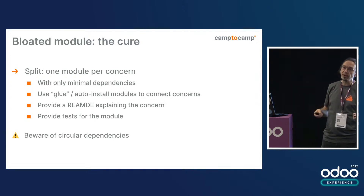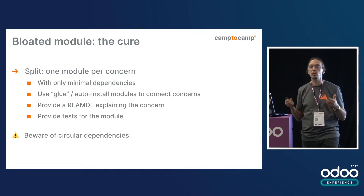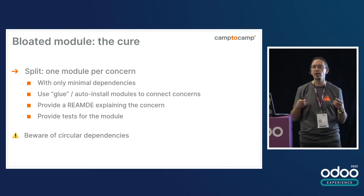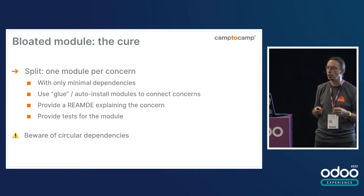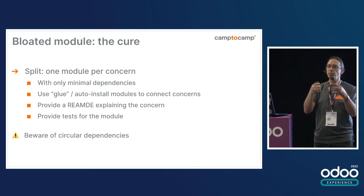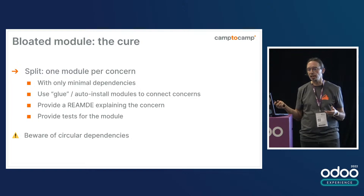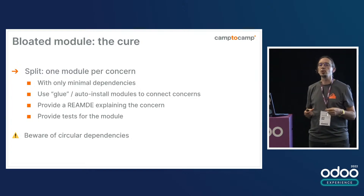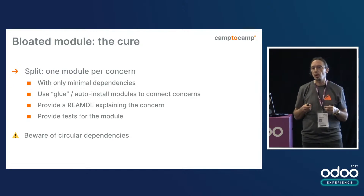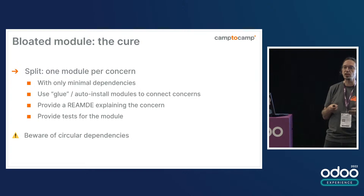Of course, provide a readme document explaining what this module is about, what it's doing, what the concern is — document things. You in six months will thank yourself for doing this when you are doing maintenance of that source code. And of course, provide tests for each module. It's easier to write smaller tests when you have one concern per module, and you may want to have integration tests separately. When splitting these modules, be careful about circular dependencies because these won't bite you straight away, but they will kill you when you try to create a new instance for your application from scratch.